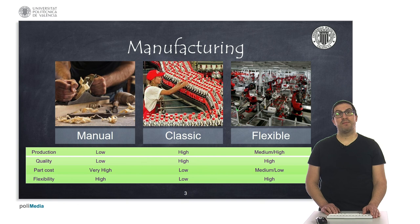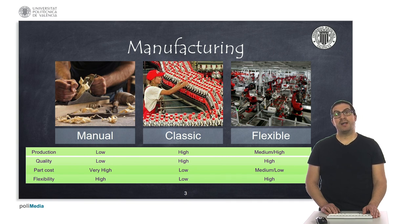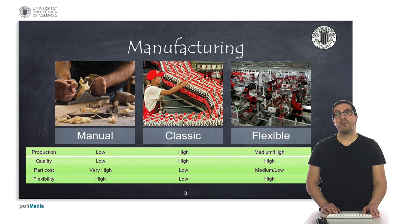Finally, we have flexible manufacturing, which combines flexible manufacturing systems that allow medium or high productions with very good quality and a medium or low cost per part. Unlike classic manufacturing, they can adapt to changes in production because the machinery is controlled by a computer — such as CNC or PLC — and they use CNC machines or robots in order to adapt the production.